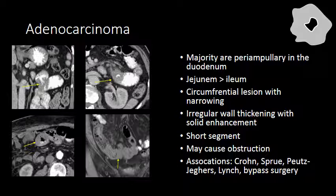Here we have examples of adenocarcinoma, highlighted by the yellow arrows. You can see this apple core appearance with circumferential irregular wall thickening and luminal narrowing.